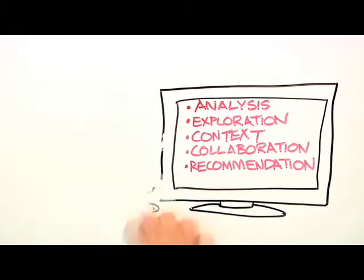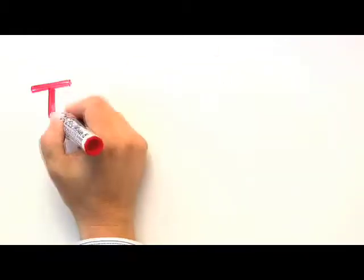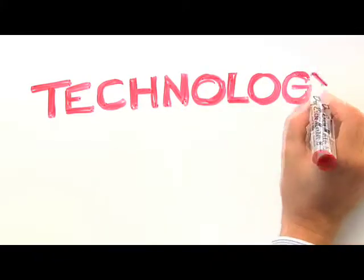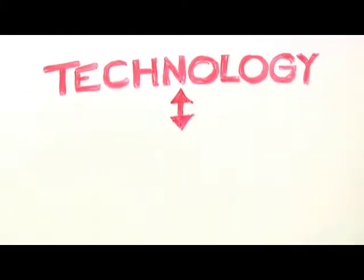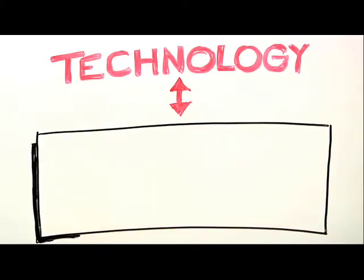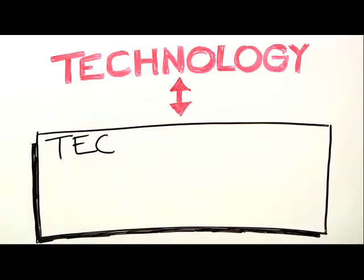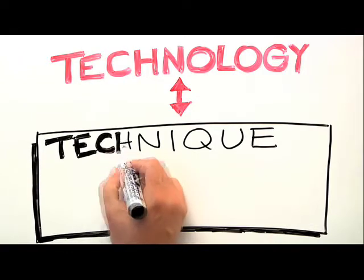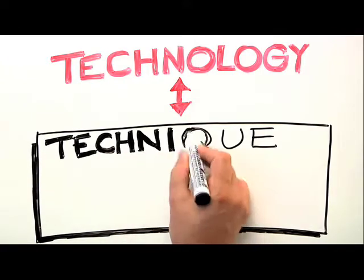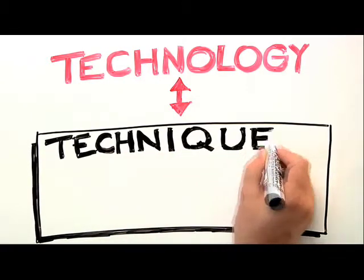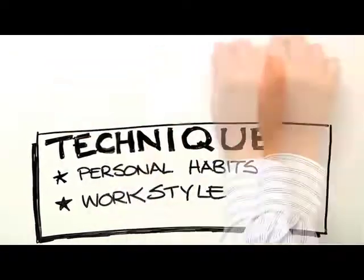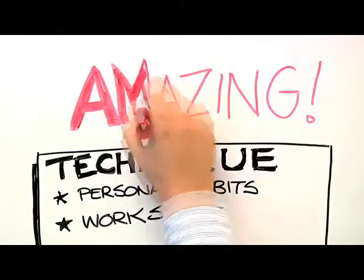Now, think about this. All the reasons mentioned earlier fit into the technology aspect of BI implementation, whereas all the top actual reasons the study found BI underperformed were associated more with technique, not technology. These reasons have more to do with the subtleties of personal habits and work styles in hectic schedules than with whether the BI infrastructure was adequate. Amazing!